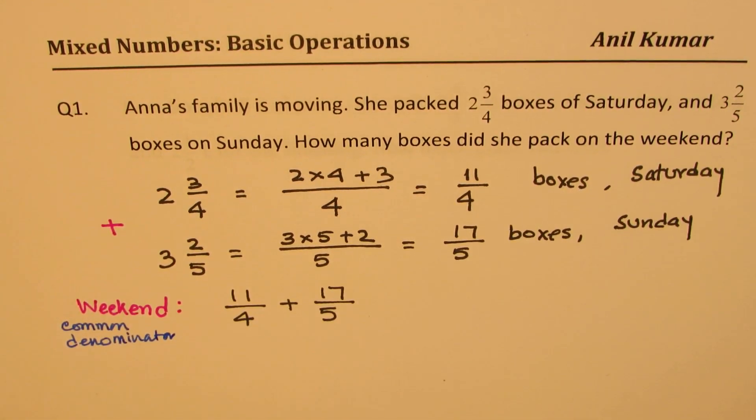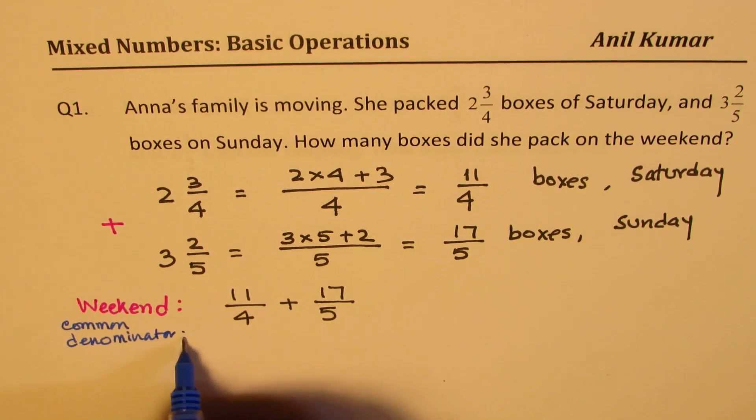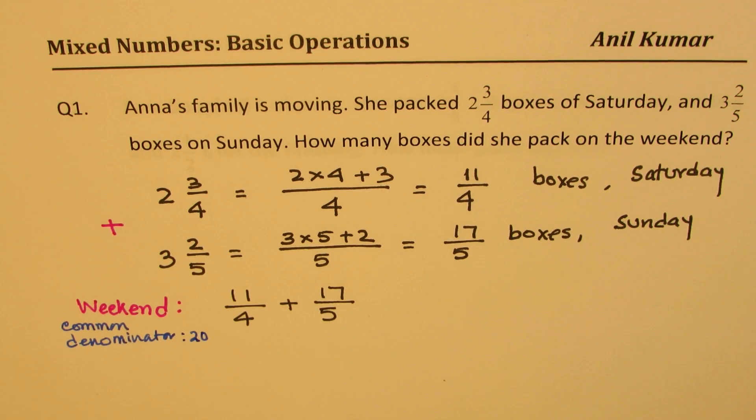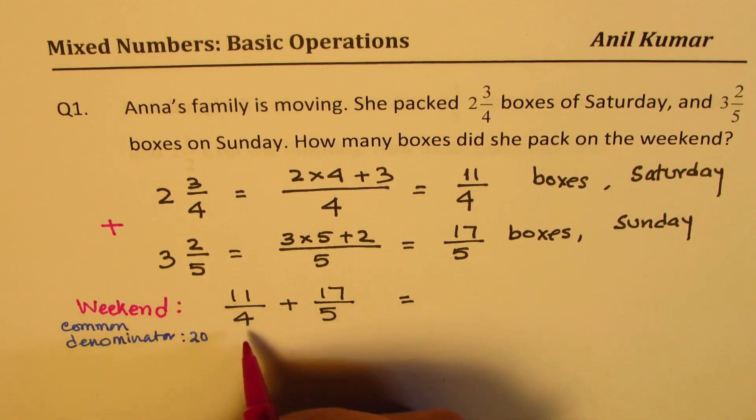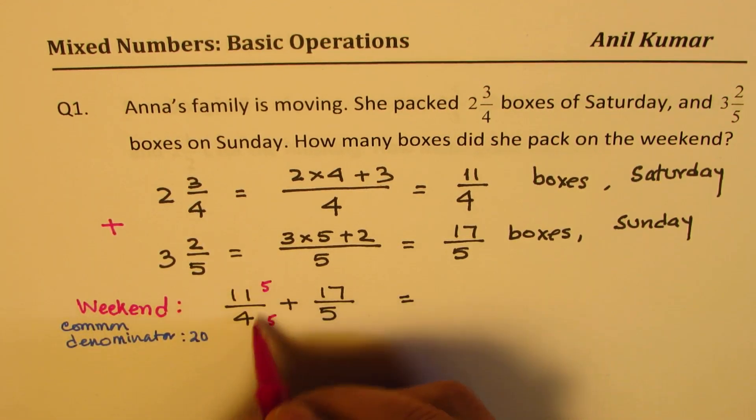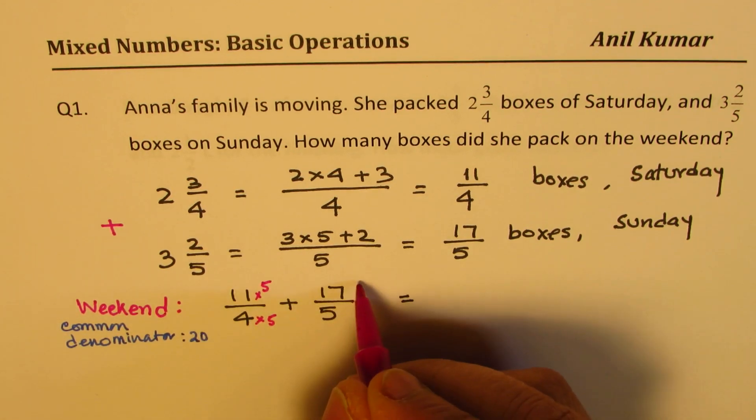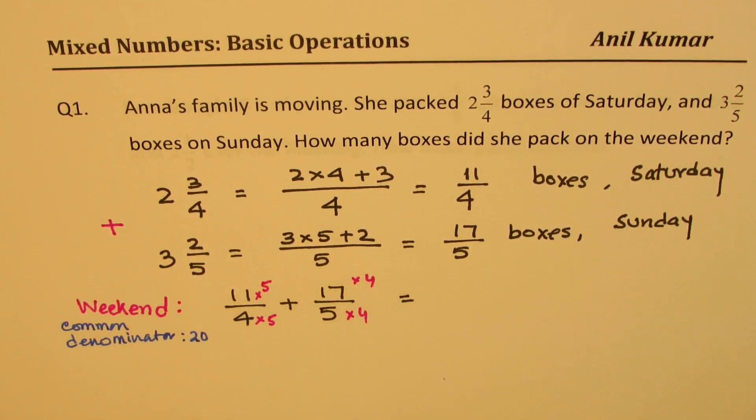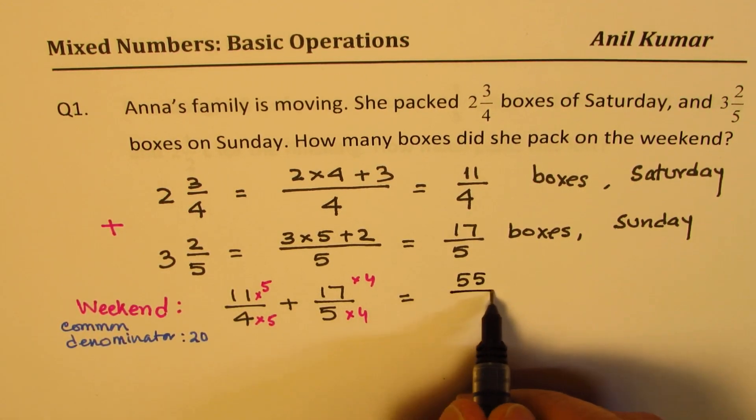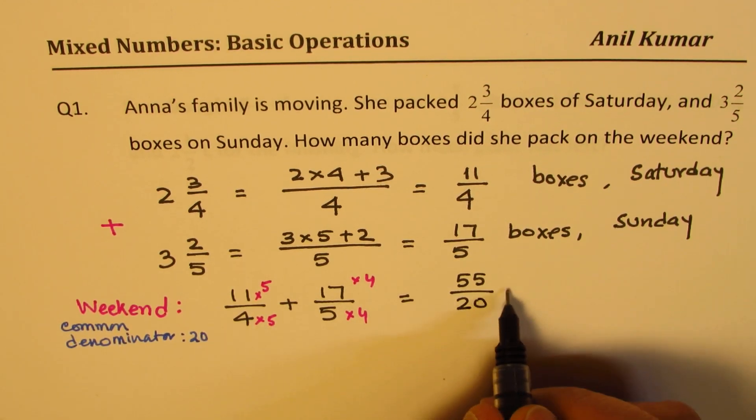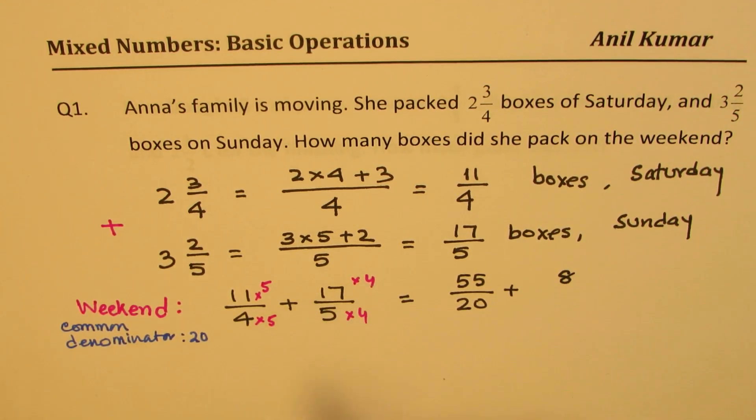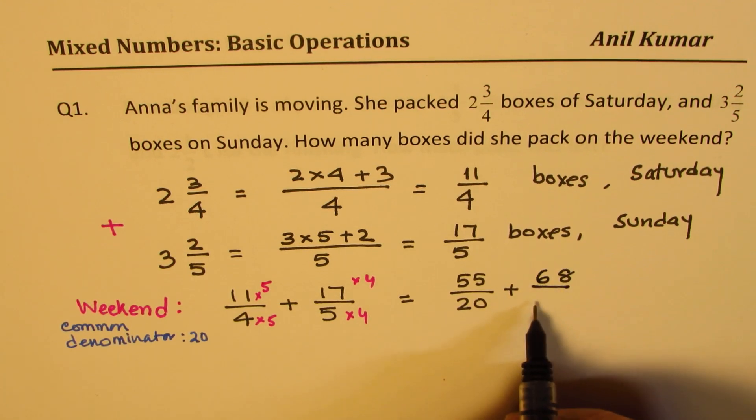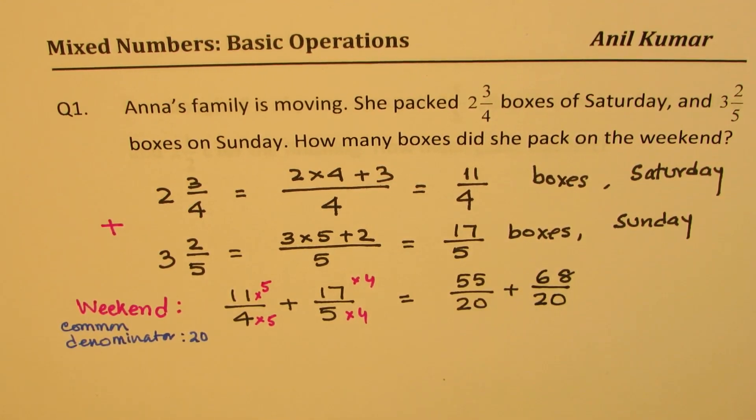For that, we need common denominator. 5 times 4 is 20, so that becomes the common denominator. We could rewrite this as, we'll multiply the first, both numerator and denominator by 5 and the second by 4. So 5 times 11 is 55, and we get a denominator of 4 times 5 which is 20, plus 17 times 4 is 68 over 20.